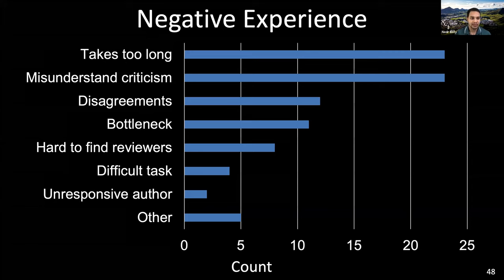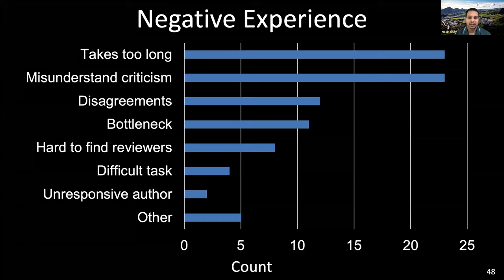Regarding negative experiences: our analysis resulted in seven categories of negative experiences. The top two negative experiences are that the code review process takes too long and that code authors misunderstand criticism. Respondents mentioned it can be very long and time-consuming for even very small changes since the process must be followed for even a single character change. When the author misunderstands criticism, reviewers are less willing to provide it or concerned about how it might affect team dynamics.